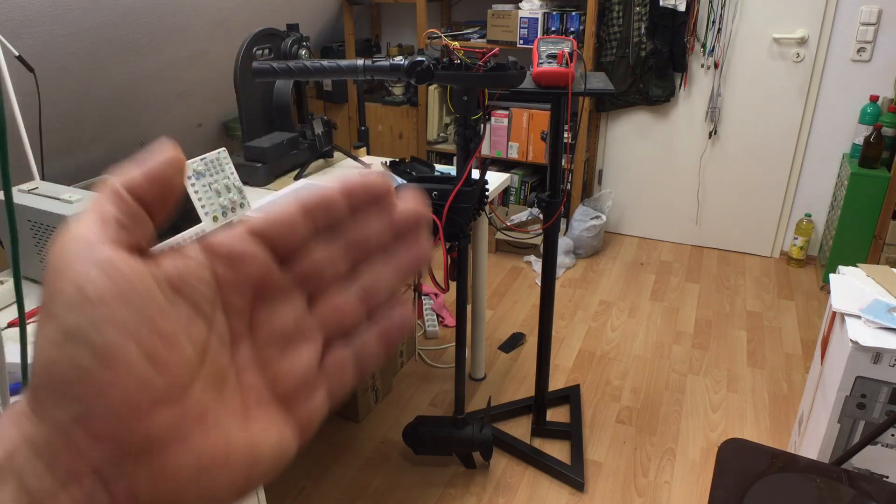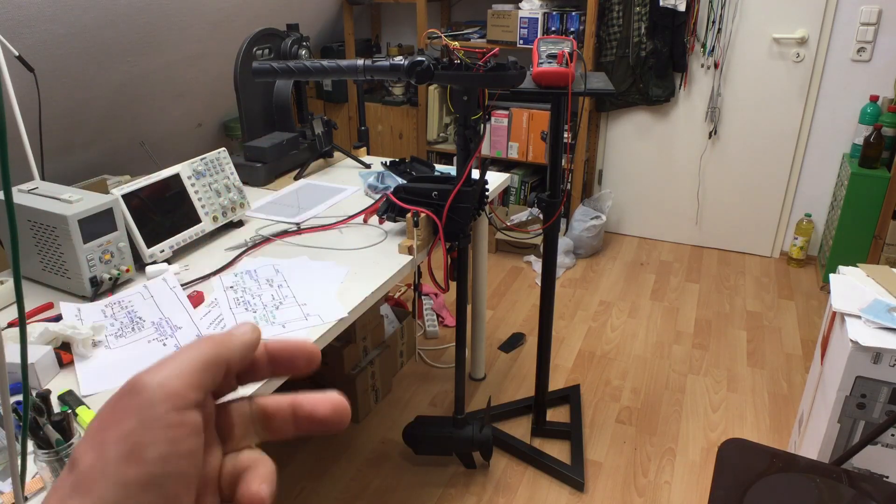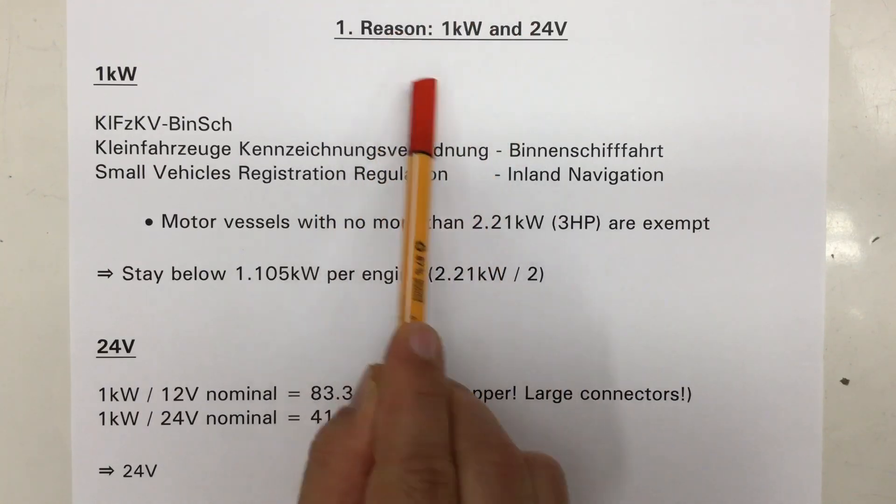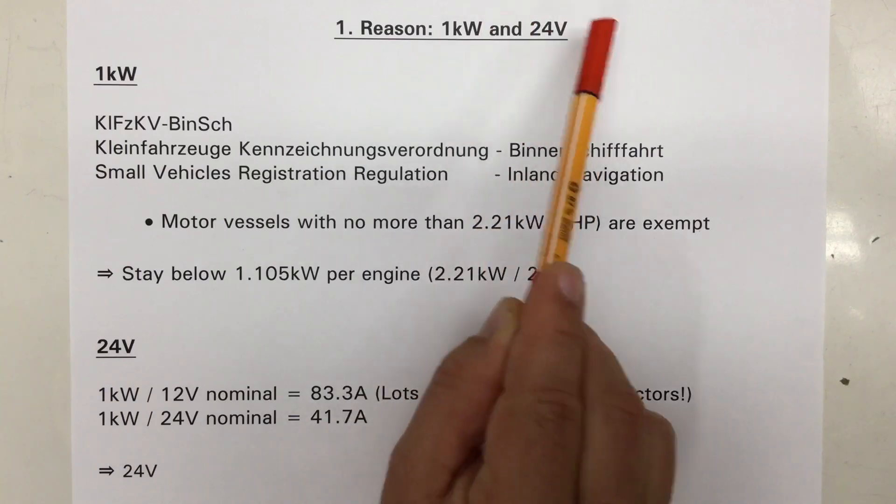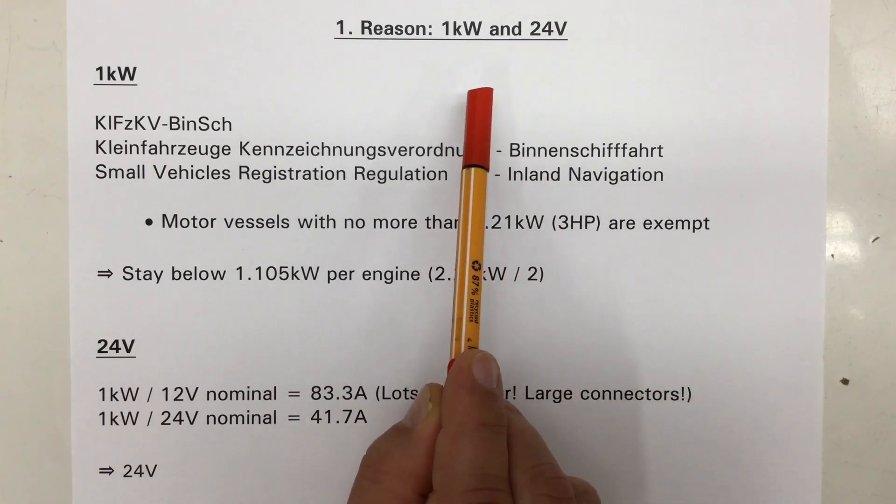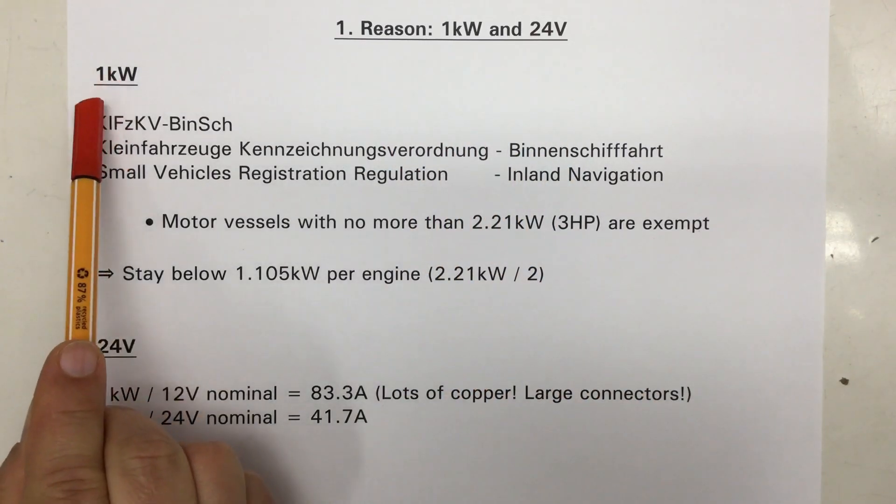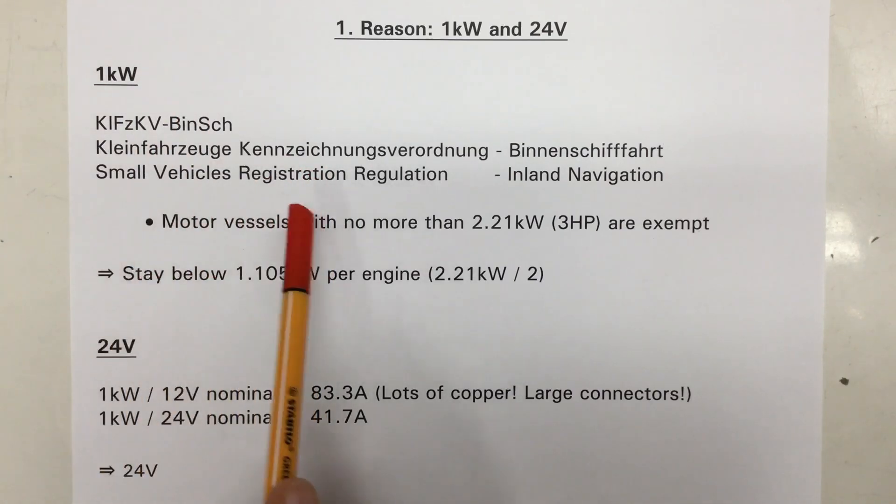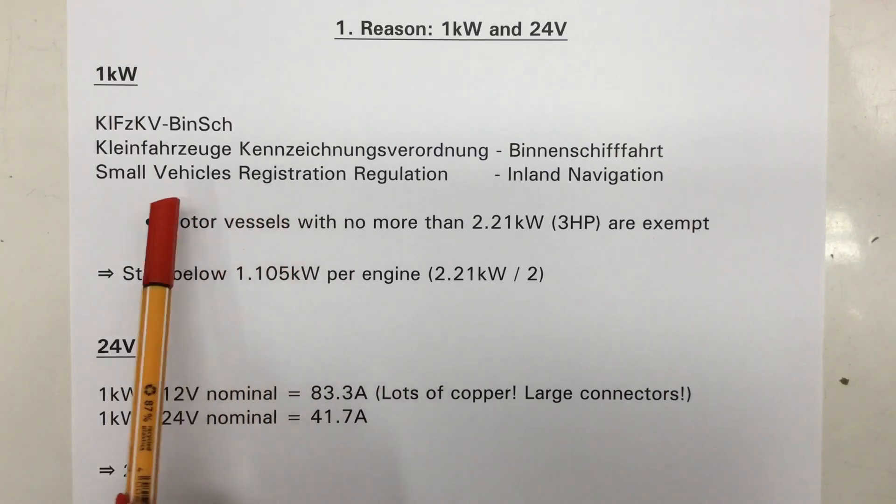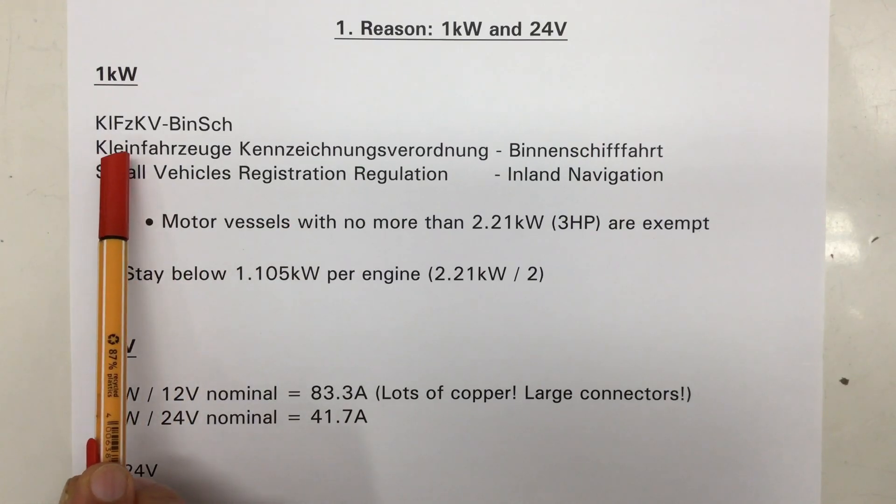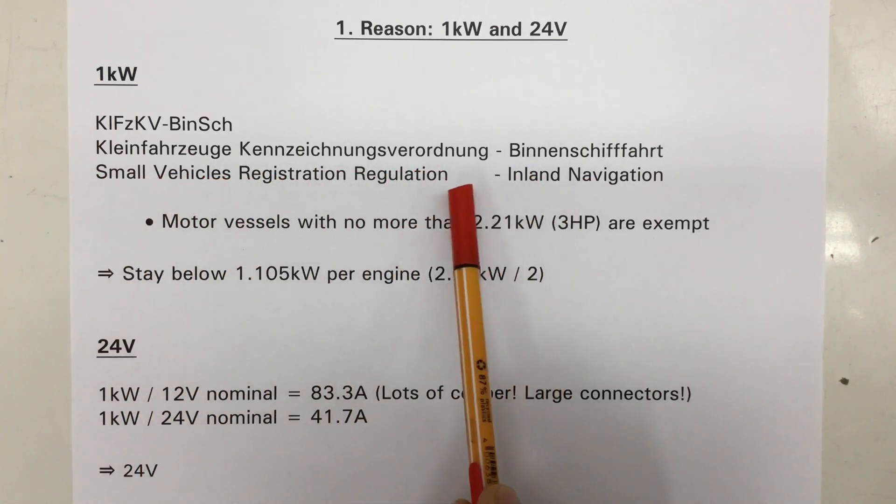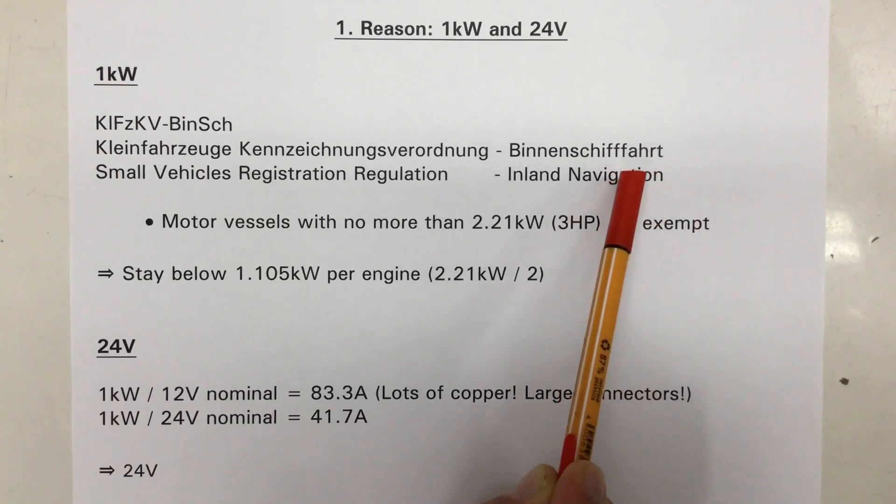There are three reasons why I chose that one kilowatt Haswing. The first reason is not really specific to the Haswing but to the one kilowatt, but the other two reasons are. The first reason I wanted something with around one kilowatt of power that ran at 24 volts. That of course limited the field of electric outboards I could choose from. But why one kilowatt? And here we come into legalities, that is regulations. And Germany is the land of regulations.